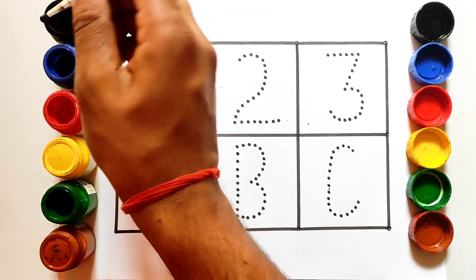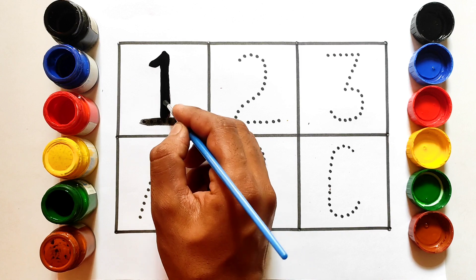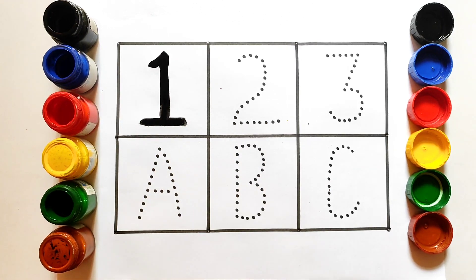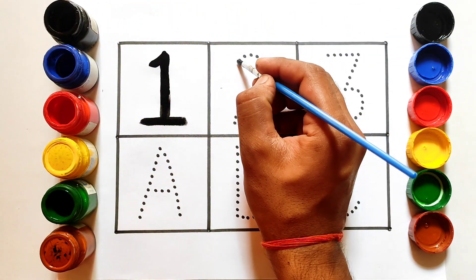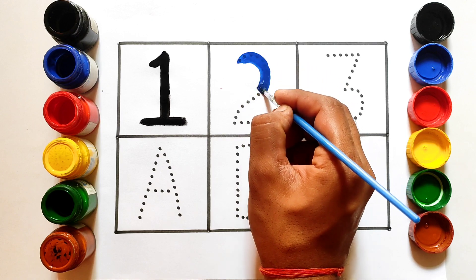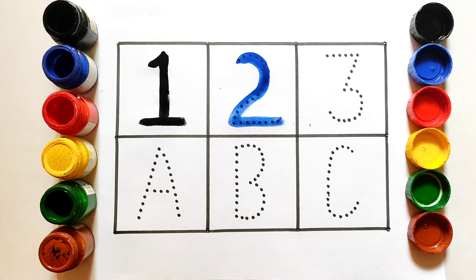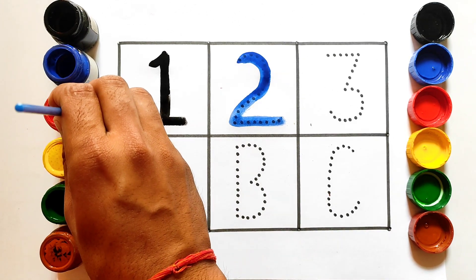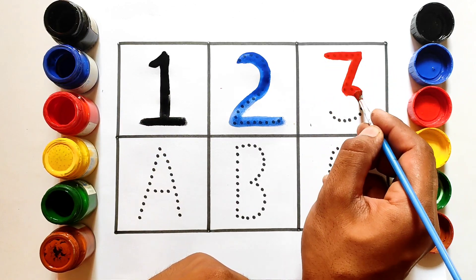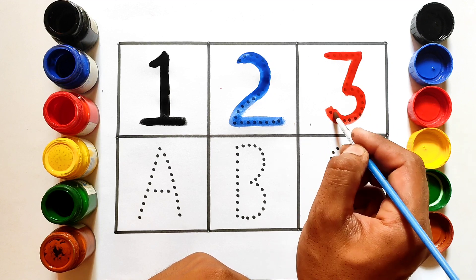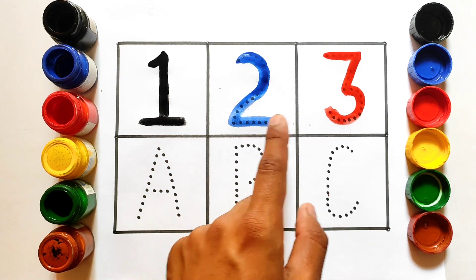So let's start the drawing. One. O-N-E, one. Two. T-W-O, two. Three. T-H-R-E-E, three. One, two, three.